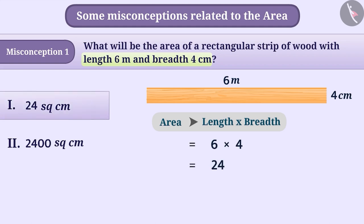They see this number in option 1 and select option 1 as the answer, but this is an incorrect answer.